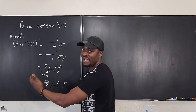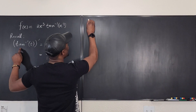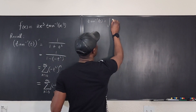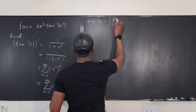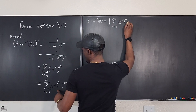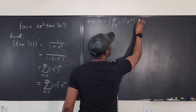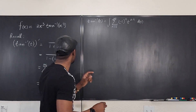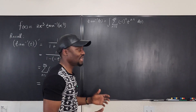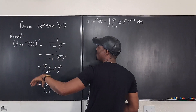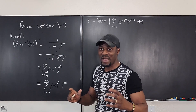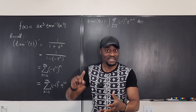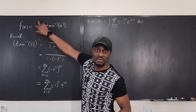To go from the derivative back to the function, we take the integral. So arctan(t) will be the integral of this power series, which is the integral of the sum from n=0 to ∞ of (−1)ⁿ·t^(2n) dt. We have to integrate with respect to t. Since (−1)ⁿ does not contain t, we can move the integral inside: it becomes the sum from n=0 to ∞ of (−1)ⁿ times the integral of t^(2n) dt.